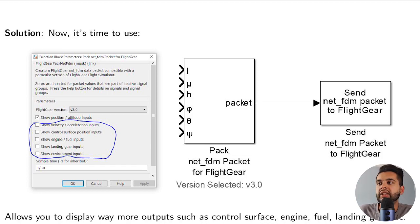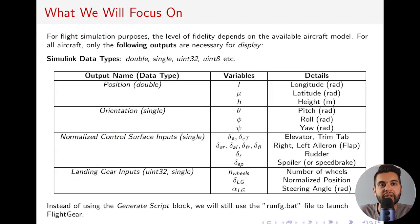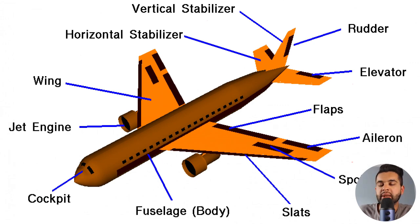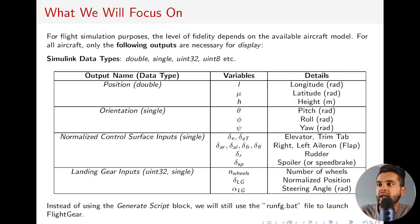So if you have a simulation which you built yourself and you want to pass parameters to the aircraft within FlightGear, you can do all this. Instead of six outputs, we now have about 11 more inputs, including elevator trim tab, ailerons, spoilers, and so on. You can also put landing gear inputs — for example, the number of wheels your airplane has, the landing gear position, and the landing gear steering angle.